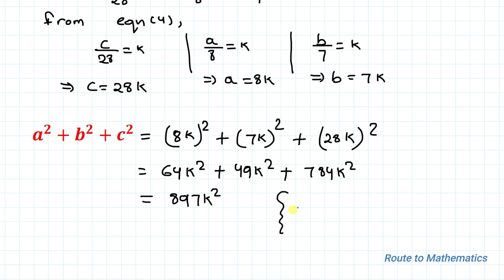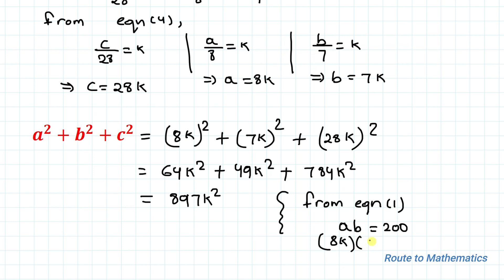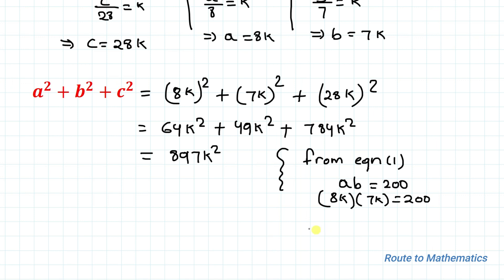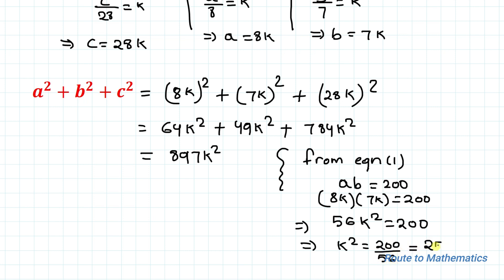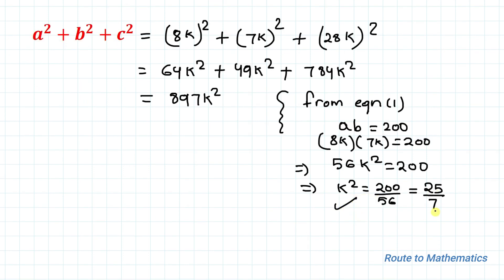To find k², we use equation 1: ab = 200. Substituting a = 8k and b = 7k gives 8k × 7k = 200, so 56k² = 200, which implies k² = 200/56 = 25/7.